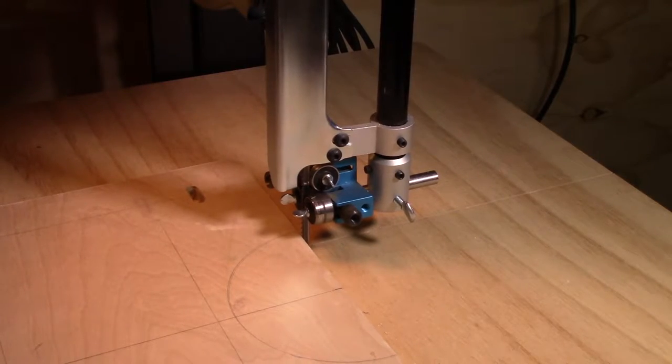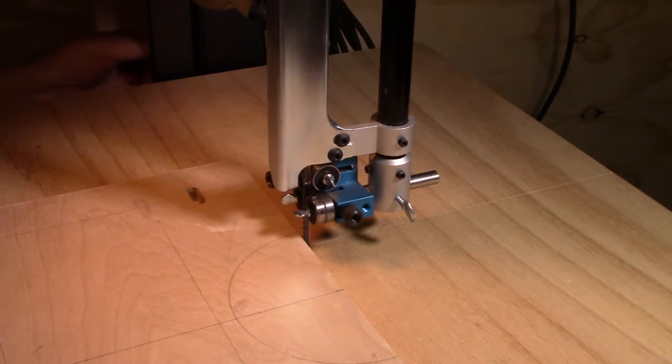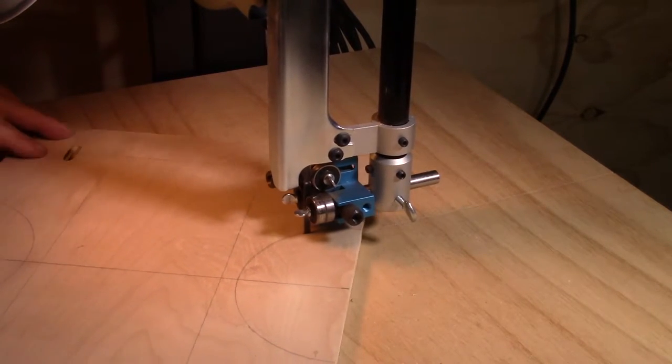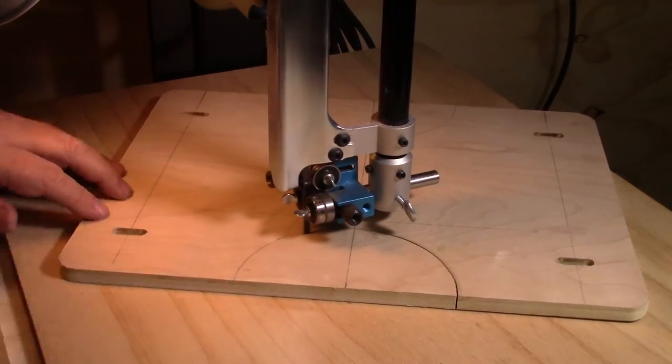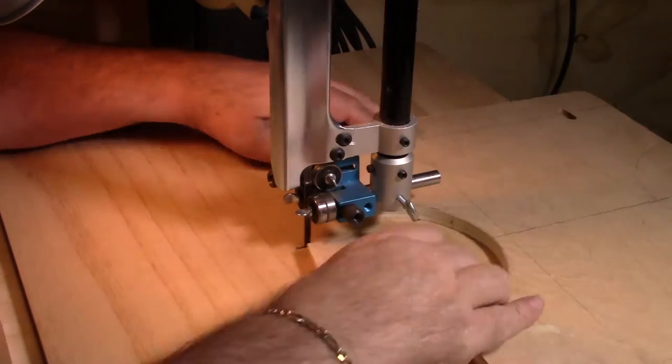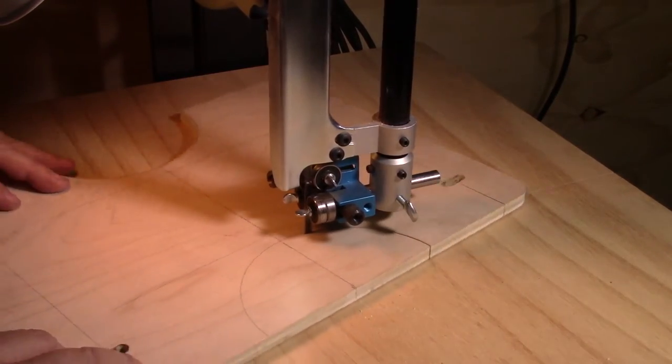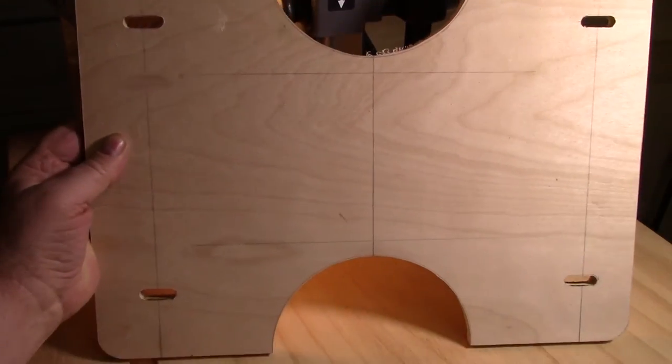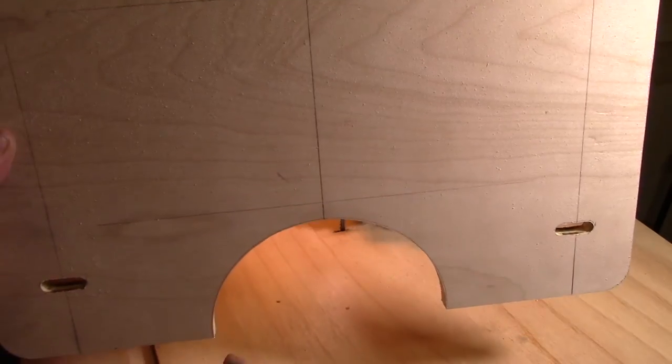Now I can go to the band saw and cut out all these other circle parts. Here at the band saw, I'm going to cut out these two circles and that'll be about it, other than sanding up to the lines there to get it all even. I got that cut out. I can go to the oscillating sander, smooth out these and sand them to the lines.